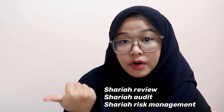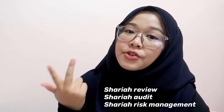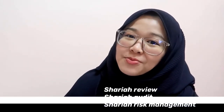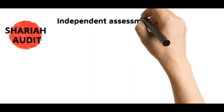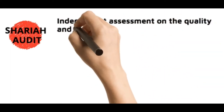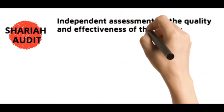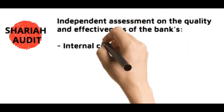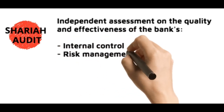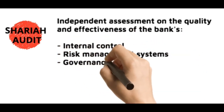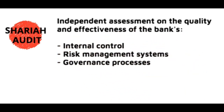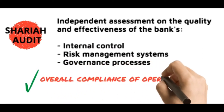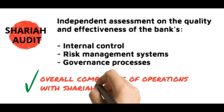In addition, there are also other functions established by Islamic banks to support the Sharia Committee. These are Sharia Review, Sharia Audit, as well as Sharia Risk Management. Sharia Audit refers to a function that provides an independent assessment on the quality and effectiveness of the bank's internal control, risk management systems, governance processes, as well as the overall compliance of operations with Sharia.